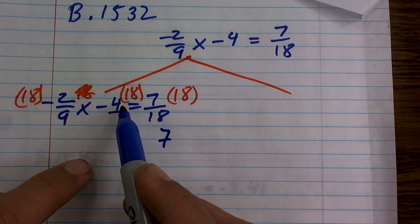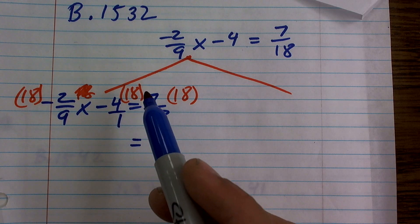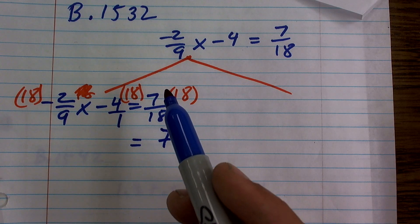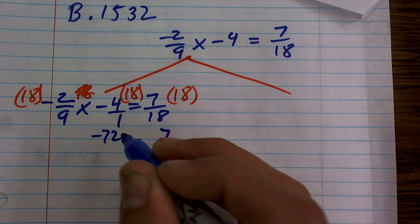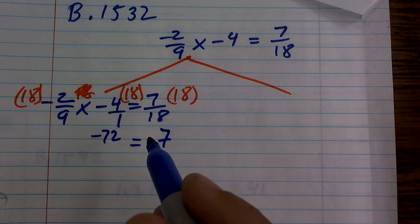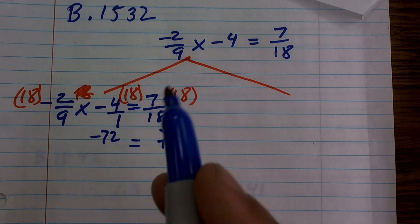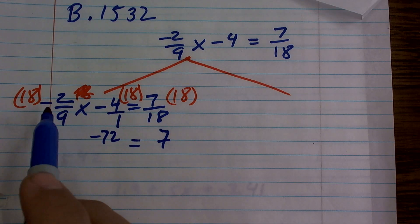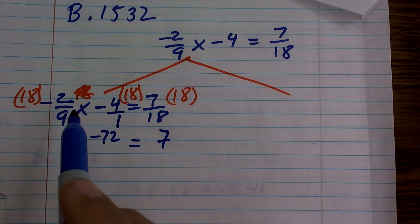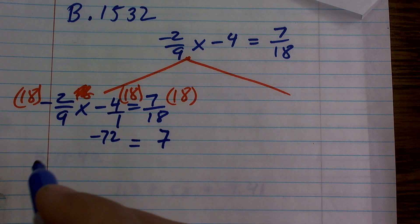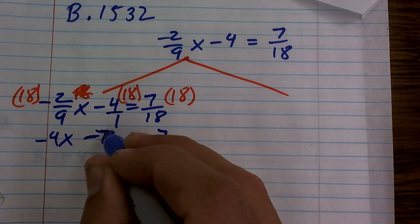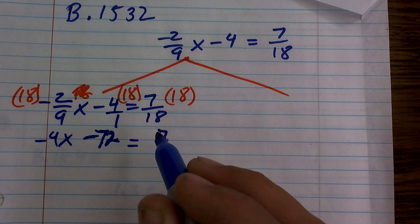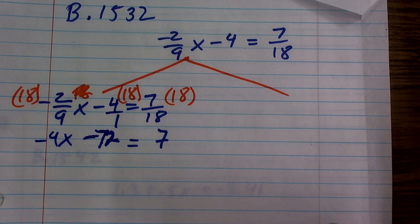So here, negative 4 times 18 is negative 72. And then I have negative 18 times negative 2 is negative 36, divided by 9, which is going to be negative 4x. So I have negative 4x minus 72 equals 7. Pretty cool, right?